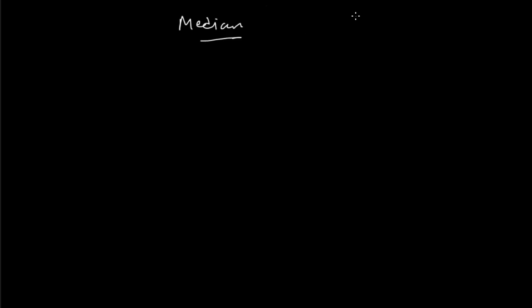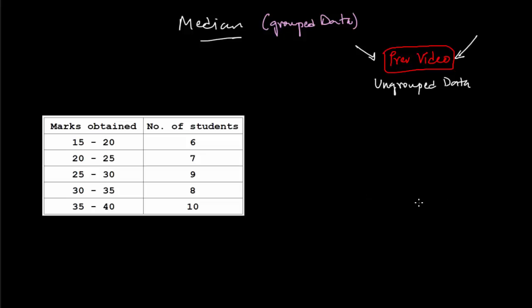Welcome to the playlist on statistics. This is a continuation video on finding median. This time we are going to find the median for grouped data. In the previous video, we found the median for ungrouped data or a discrete series. If you haven't watched the previous video, you can click on this red box on the screen and it will take you to that video. So with no further ado, let's begin. Let me just get a question on the board.